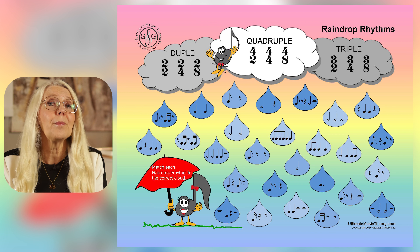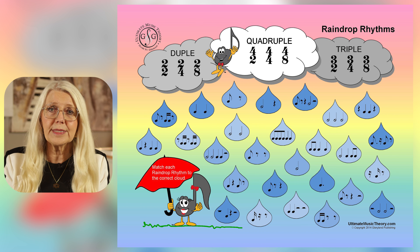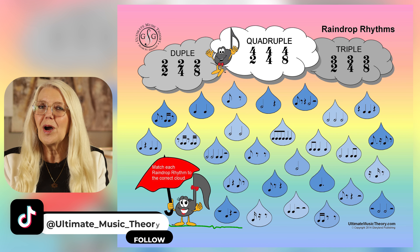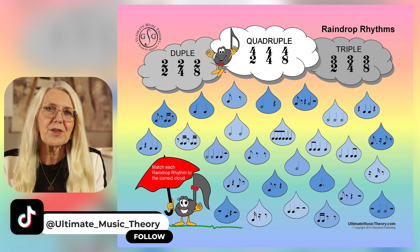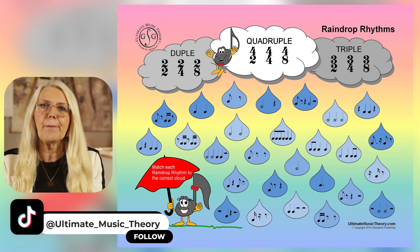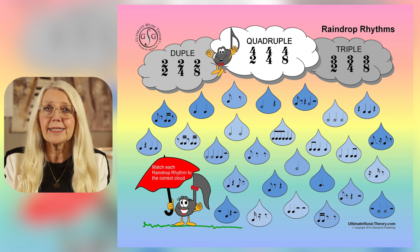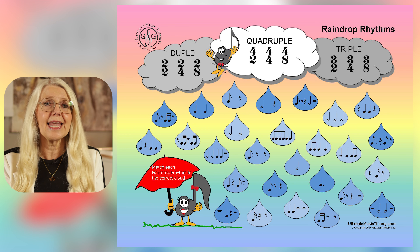Let's start with Raindrop Rhythms. This game turns understanding rhythms and time signatures into a thrilling team challenge. Watch your students' eyes light up with every correct rhythm that they clap, feeling the basic beat and pulse as they identify the correct time signature. Exploring tapping a steady beat with your foot while clapping, saying, or even singing the Raindrop Rhythms — it's really engaging the whole body learning.